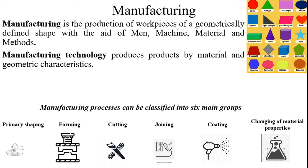Manufacturing technology produces products by material and geometric characteristics. Manufacturing processes can be classified into six main groups: primary shaping, forming, cutting, joining, coating, and changing of material properties.